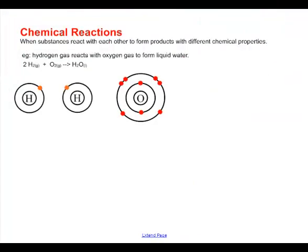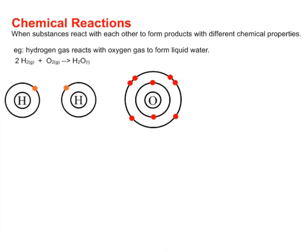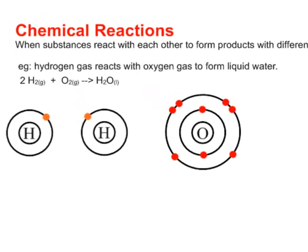We're going to be talking about chemical reactions. In a chemical reaction, substances react with each other to form products with different chemical properties. Here's a classic, pretty simple one: the reaction of hydrogen gas with oxygen to make a molecule of water. On the equation you can see I've got two hydrogen gas react with one oxygen and they make a molecule of water.